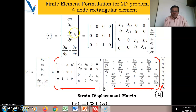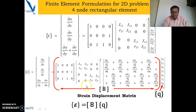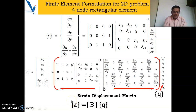Last time we studied the finite element formulation for 2D problems, and we saw how to obtain the strain-displacement matrix B, giving the complete relation ε = Bq. We have seen this for the triangular element, the 1D linear bar element, and for the four-node rectangular element — how to obtain the strain-displacement matrix and the displacement vector.